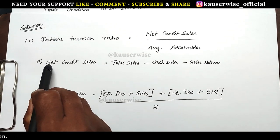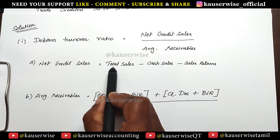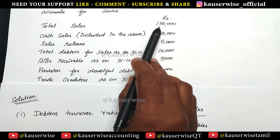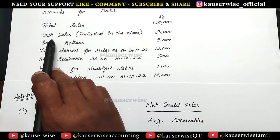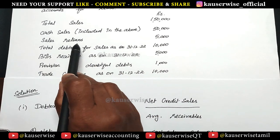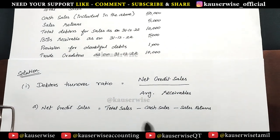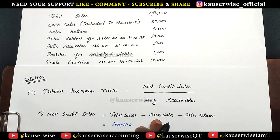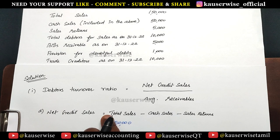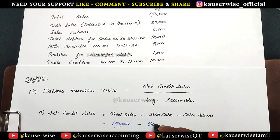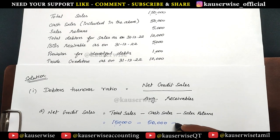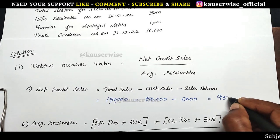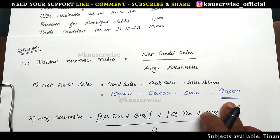Now first we need to calculate net credit sales. For that, see the total sales, cash sales, and sales return from the problem. Total sales: 1,50,000. Cash sales is already included in total sales, so we need to subtract 50,000. Then sales returns: 5,000 — subtract that as well. You will be getting 95,000. So 95,000 is the net credit sales.